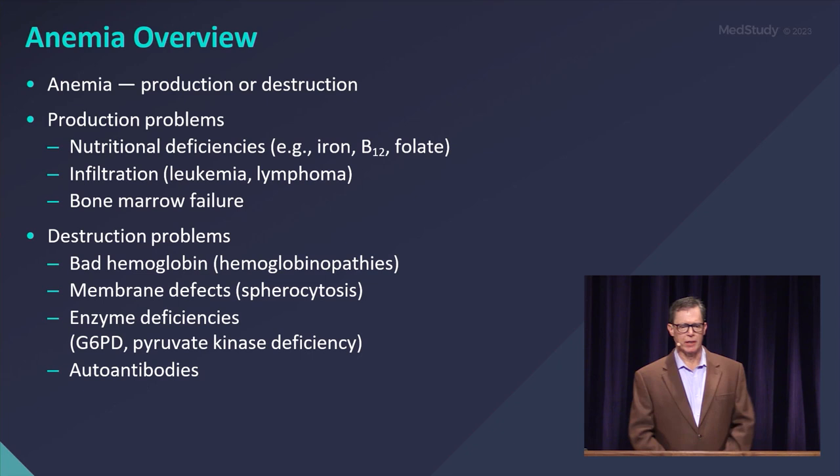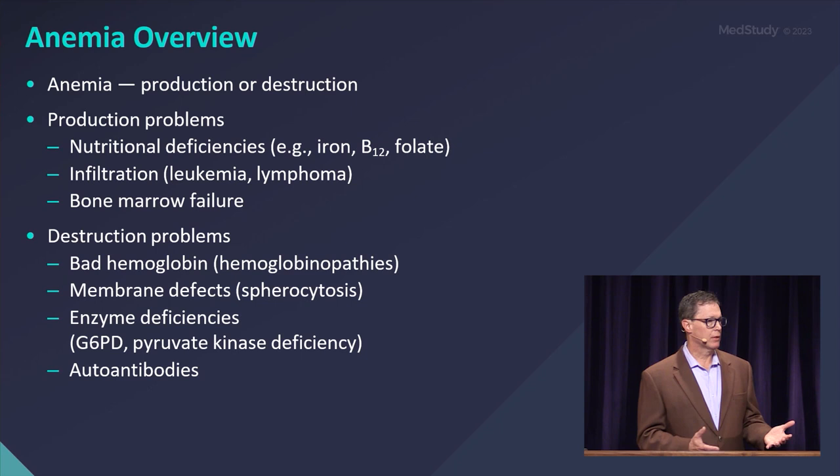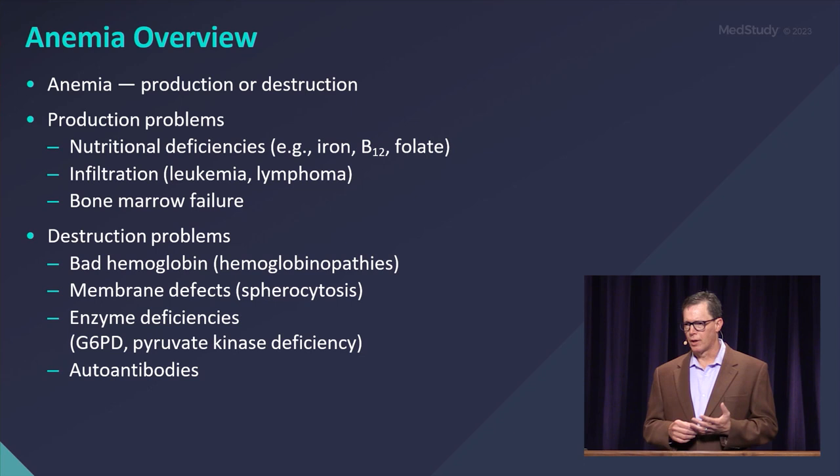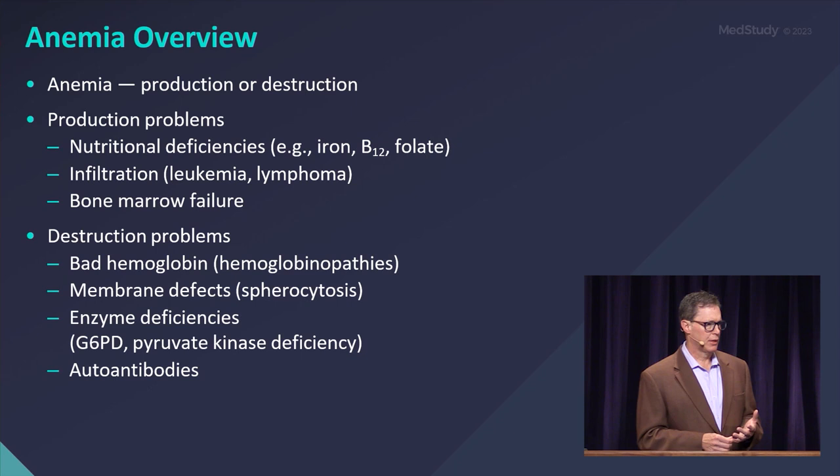Diving right into anemia. We can look at production or destruction processes. Starting with production problems, we can break that out into nutritional deficiencies — the ever-present iron deficiency anemia, but also other nutritional deficiencies such as folate and B12, which you'll run into in your practice and on board exams.